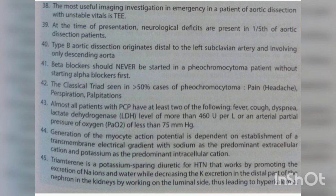Generation of the myocyte action potential is dependent on establishment of a transmembrane electrical gradient, with sodium as the predominant extracellular cation and potassium as the predominant intracellular cation. Triamterene is a potassium-sparing diuretic that works by promoting excretion of sodium ions and water while decreasing potassium excretion in the distal nephron, working on the luminal side, thus leading to hyperkalemia. Loss of more than 80% of nephrons impairs base regeneration by the process of ammoniagenesis.